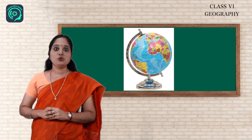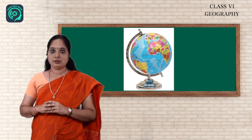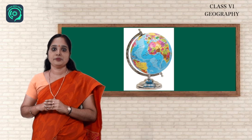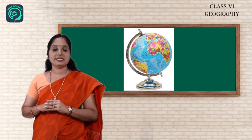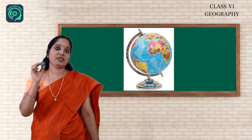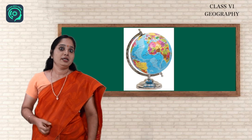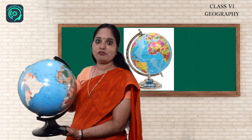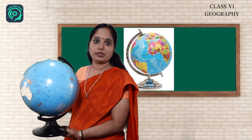Globe is the true model of the earth. There are various types of globes in various sizes. There are very small pocket globes which are very easy to carry. There are big globes and even globe-like balloons. The globe is not fixed — it can be rotated. The earth rotates west to east, and similarly we can also rotate the globe.